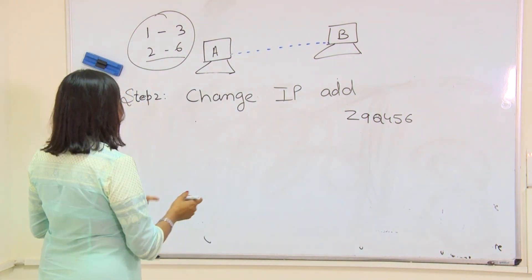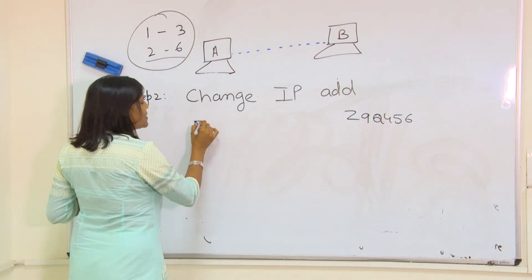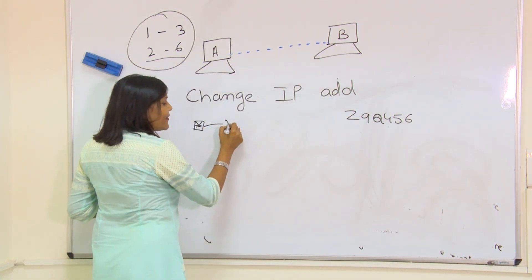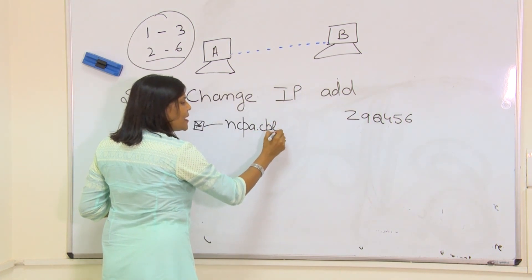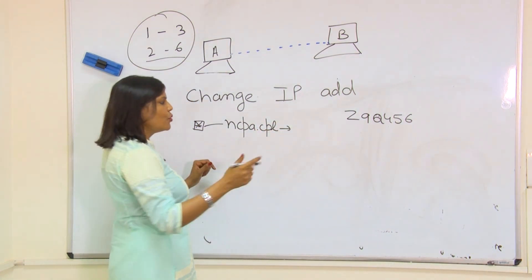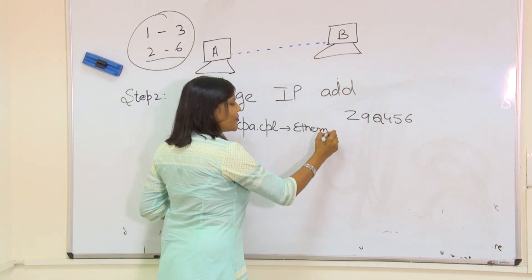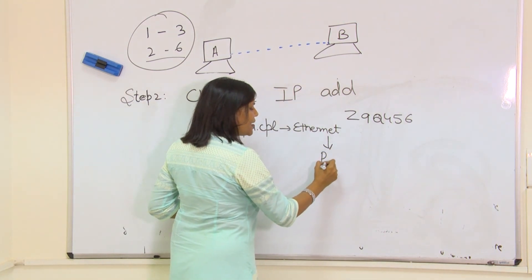Now, how to change that IP address? First, just click on the window icon. I am supposing that you all have Windows operating system and write ncpa.cpl. You will see a window. Click on Ethernet and then right click, properties.